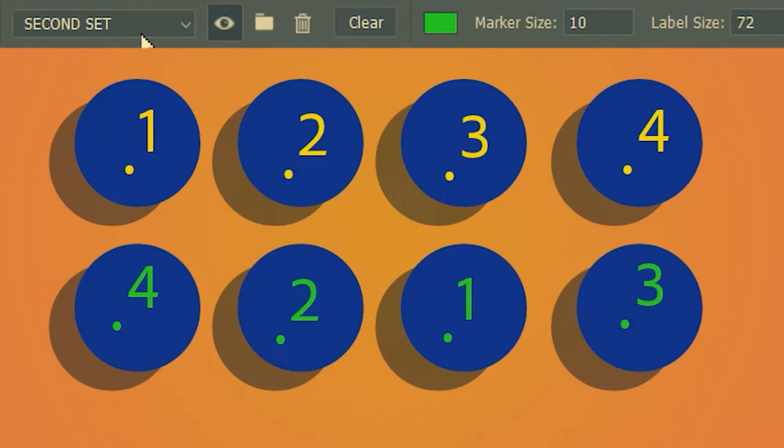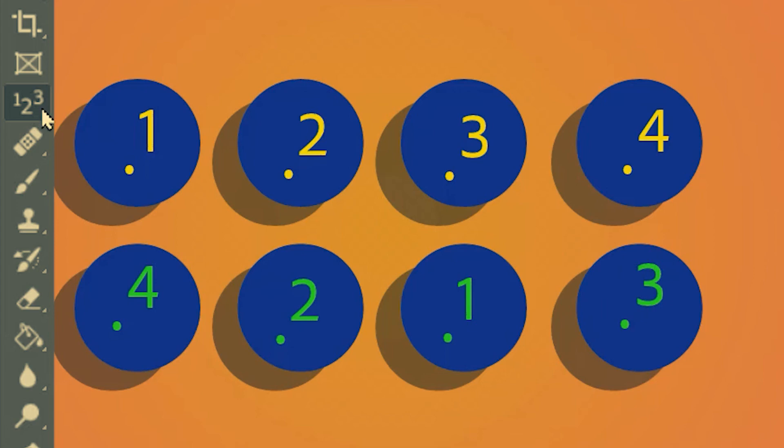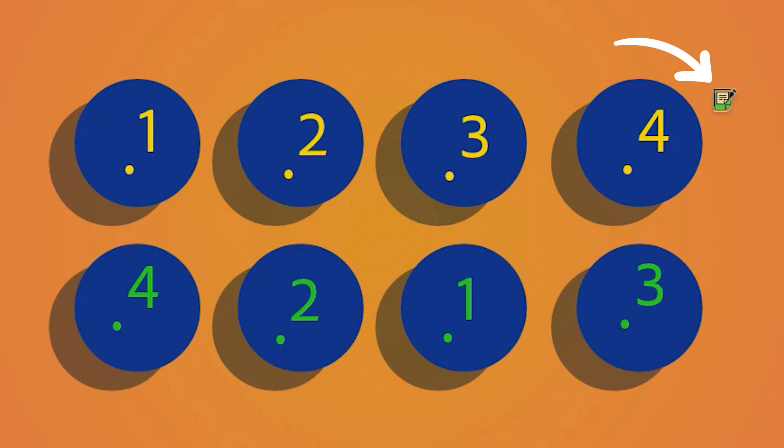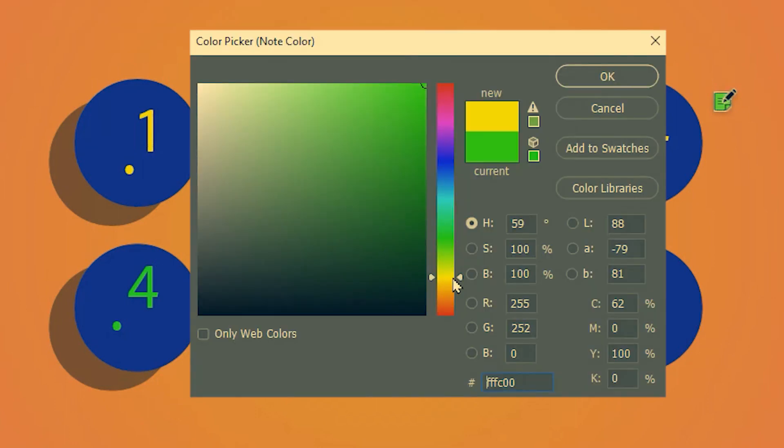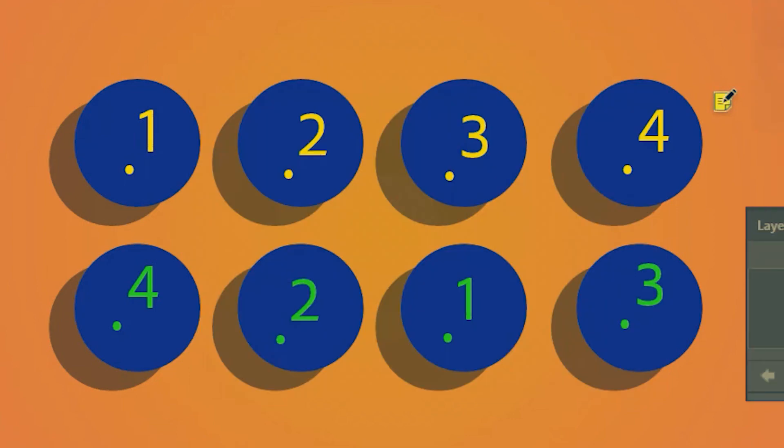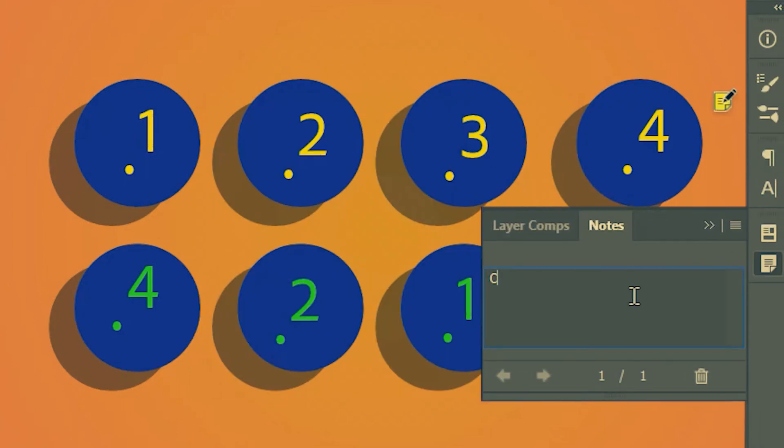Then I'm going to grab the note tool from here under the same stack. Then I'm going to click somewhere over here near the top row. Maybe change its color for color coordination. Then I'm going to type in the instructions for these balls.